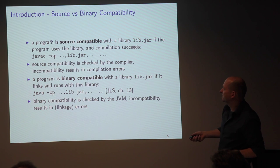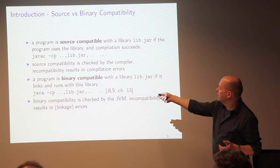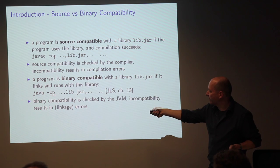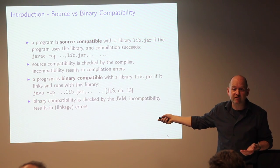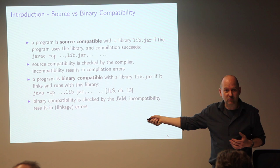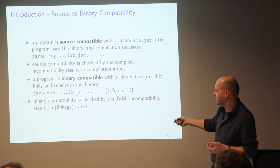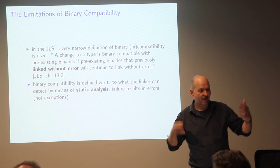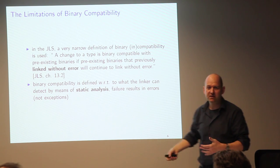We have source compatibility if our program compiles with a library in the classpath, and binary compatibility if we can run it with that library in the classpath. These notions are more precisely defined in the Java Language Specification. Binary compatibility is defined with respect to linking: if you start your Java program and the JVM doesn't produce a linkage error when it links things together, then it's binary compatible. That's really what it means.